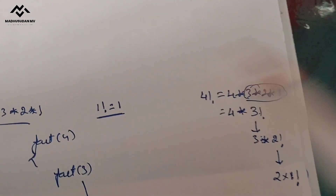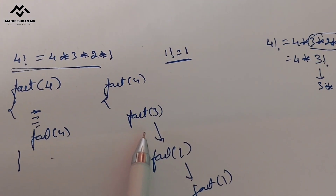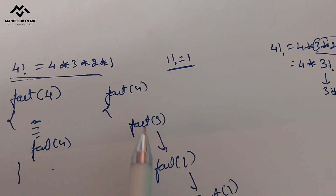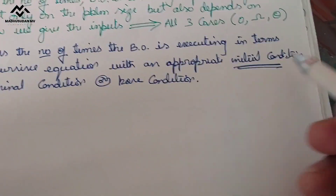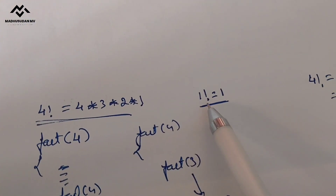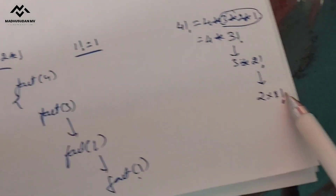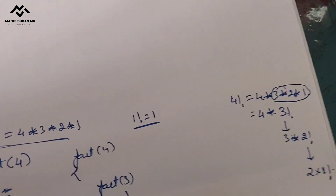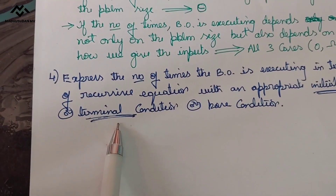When it reaches 1, we stop calling. We call this stopping point the initial condition — also called the terminal condition — because we know that 1 factorial equals 1. We stop calling the function whenever we reach this initial condition, so it is also called the terminal condition.